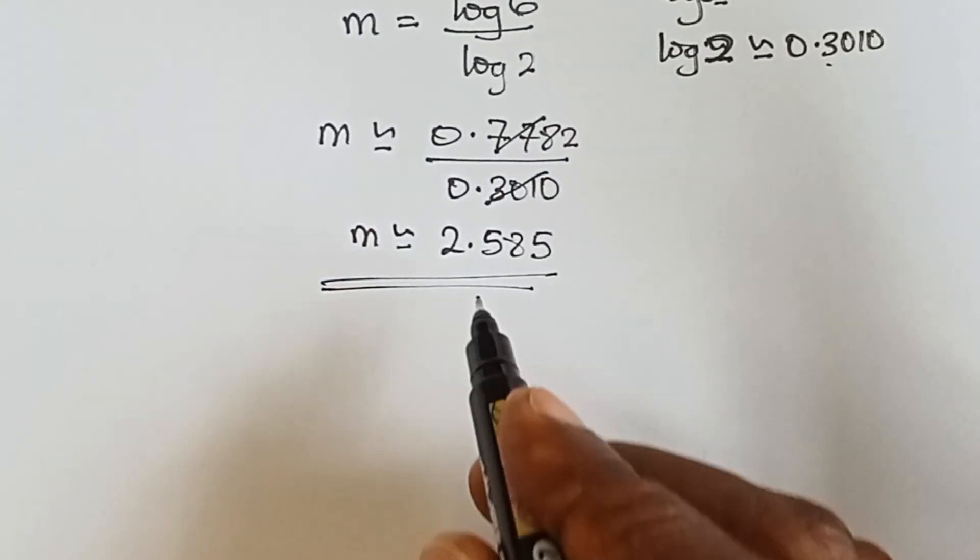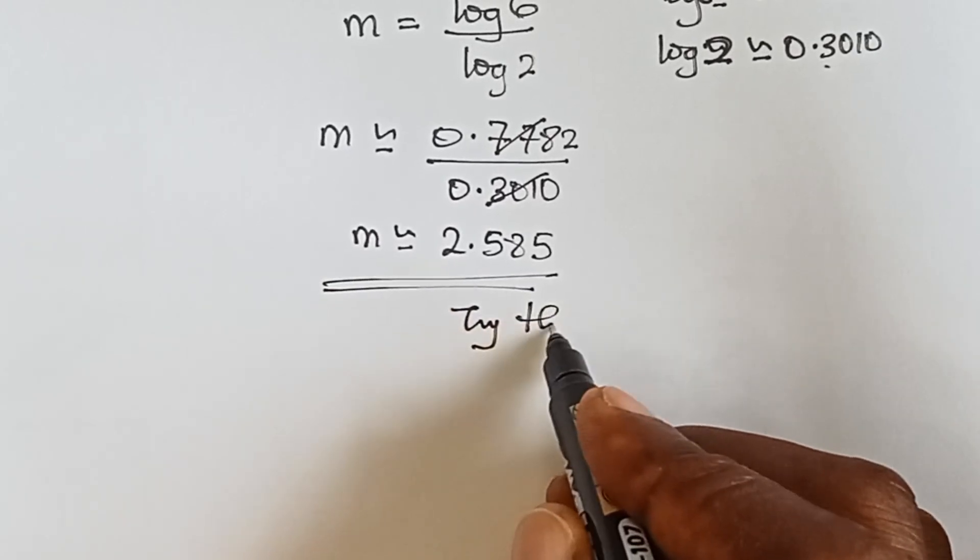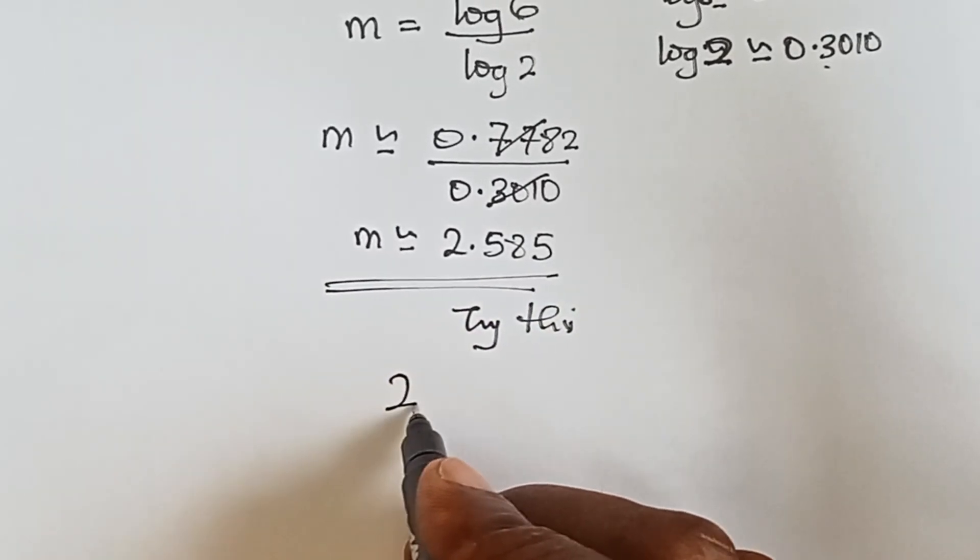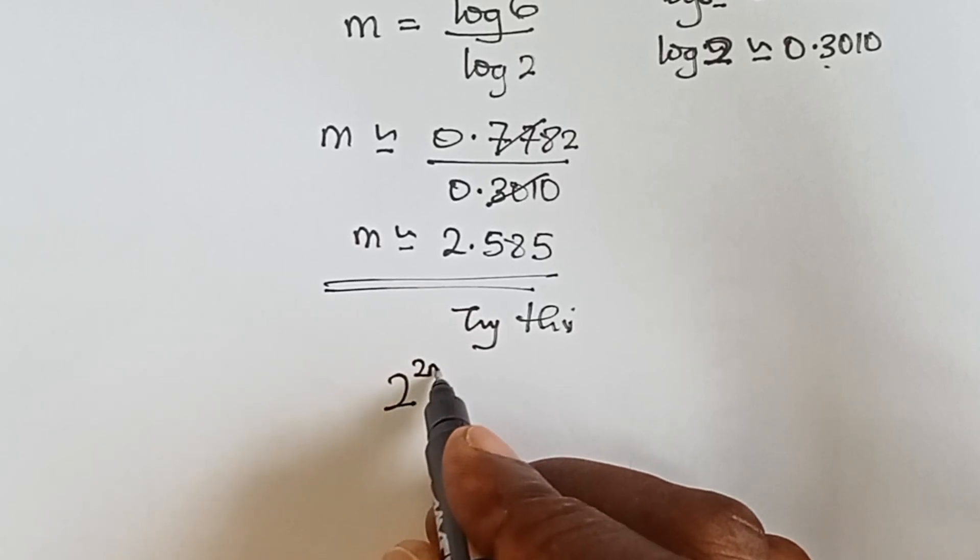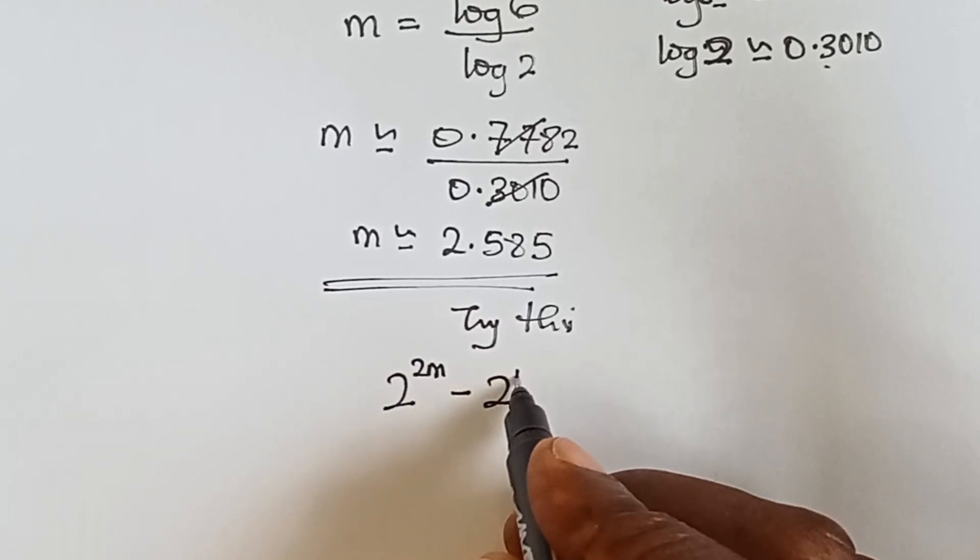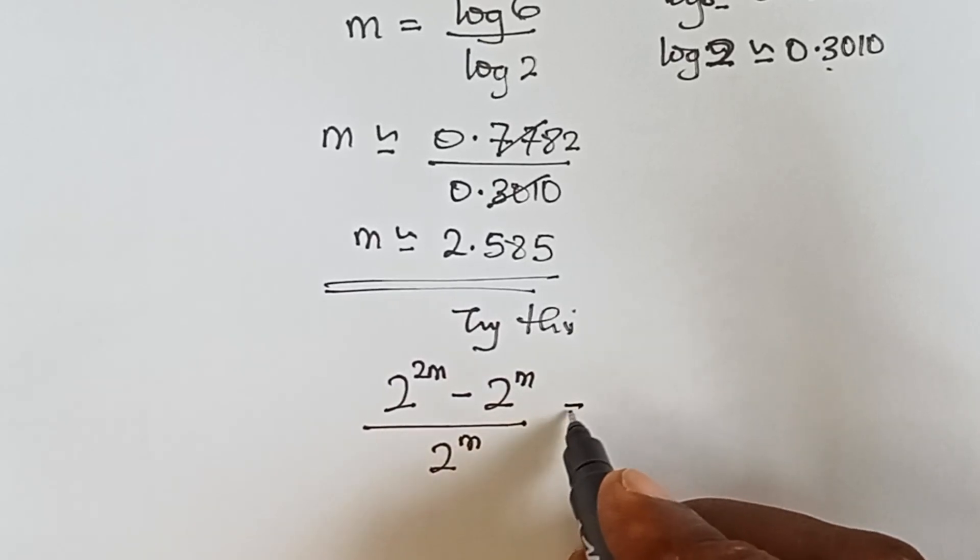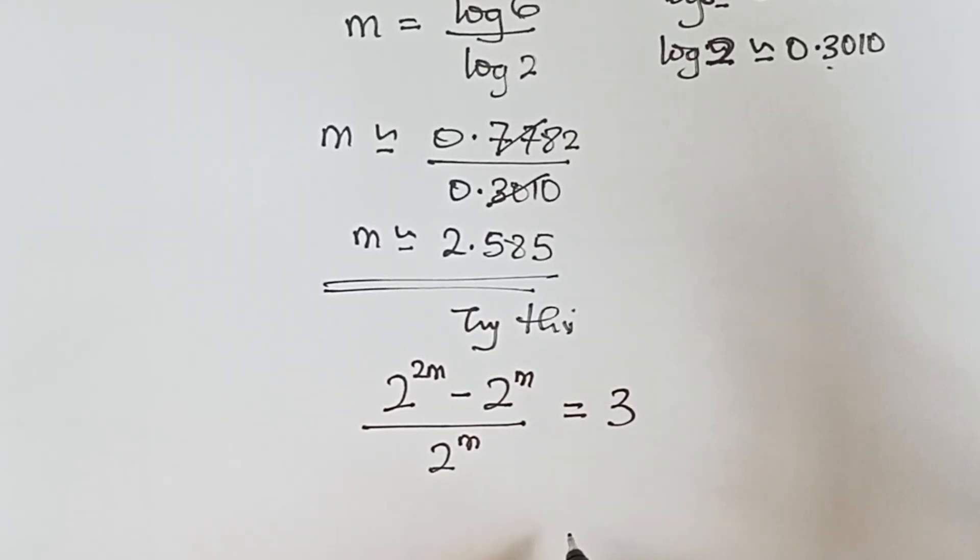Let's try this. Solve 2 raised to the power 2m minus 2 raised to the power m, over 2 raised to the power m, equals to 3.